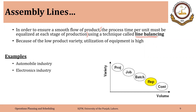Because of the low product variety, utilization of equipment is high — in contrast to project process and jobbing. It is one of the goals to keep equipment running so we can produce more in less time, first achieving what is called capital recovery to reach the break-even point and then start earning profit.